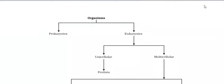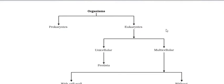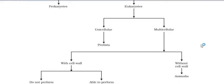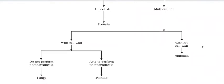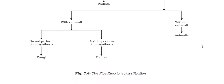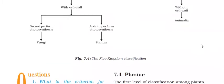All organisms are divided into two groups: prokaryotes and eukaryotes. Eukaryotes are further divided into unicellular and multicellular, and again into those with a cell wall and those without. Without a cell wall is Animalia. With a cell wall gives two groups: fungi and plantae. In fungi there is no photosynthesis; in plantae there is photosynthesis.